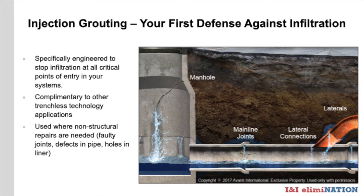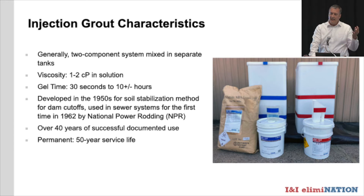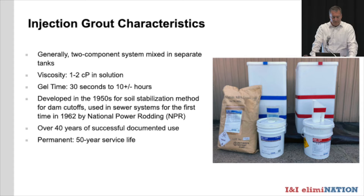Grout is complementary to other trenchless technologies — it's not meant to compete. We work side by side, hand in glove with CIPP. Grouting is often done ahead of time to stop infiltration and allow CIPP to be installed. It's generally used where non-structural repairs are needed and can be a great long-term solution for faulty joints, holes, and defects in pipe. It's a two-component system mixed in separate tanks — Tank A and Tank B — with gel times typically from 30 seconds up to a minute for sanitary sewer lines. It was developed in the 1950s for soil stabilization and first used in 1962 by National Power Rod to grout a sanitary sewer line.